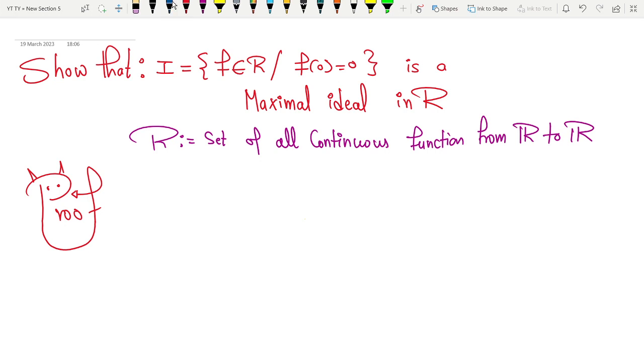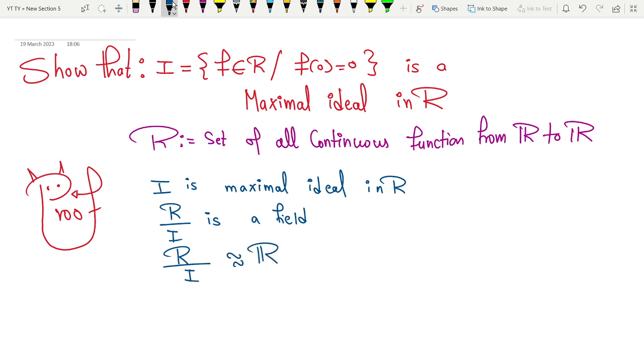To prove this, I will prove that I is a maximal ideal in R. For that, I will prove that R/I is a field. And this result is easy because I can prove R/I is isomorphic to the set of all real numbers ℝ. I need to show that.